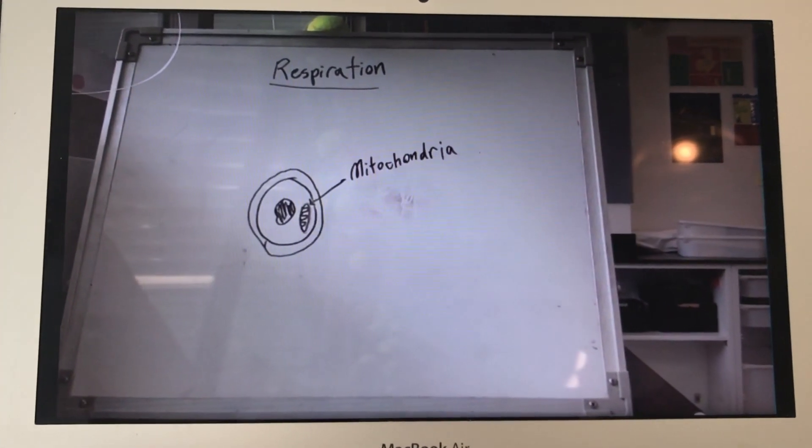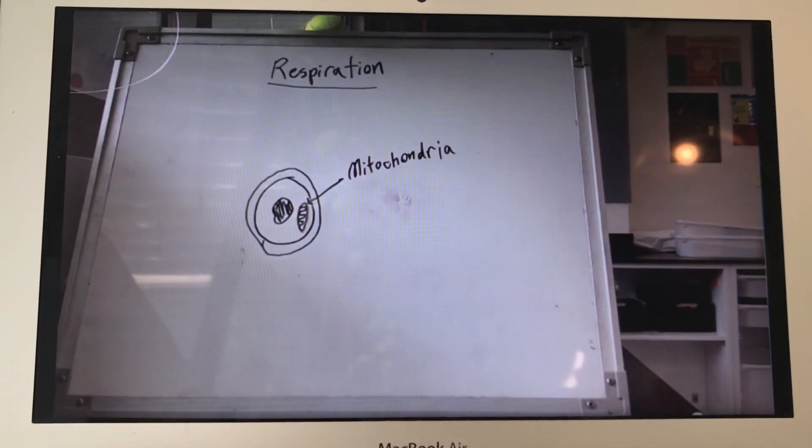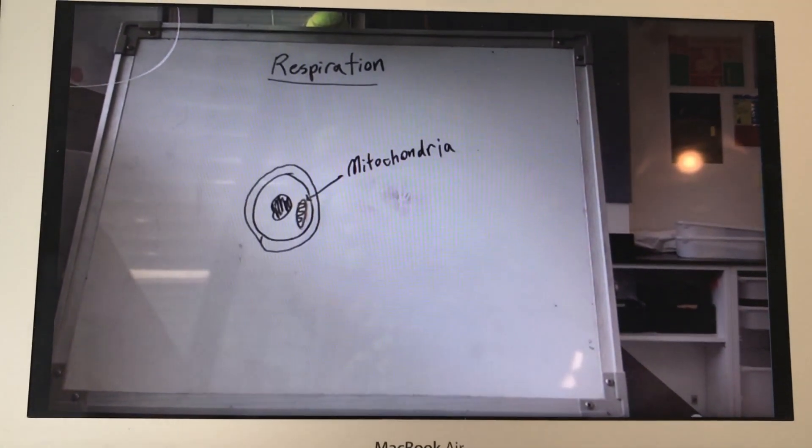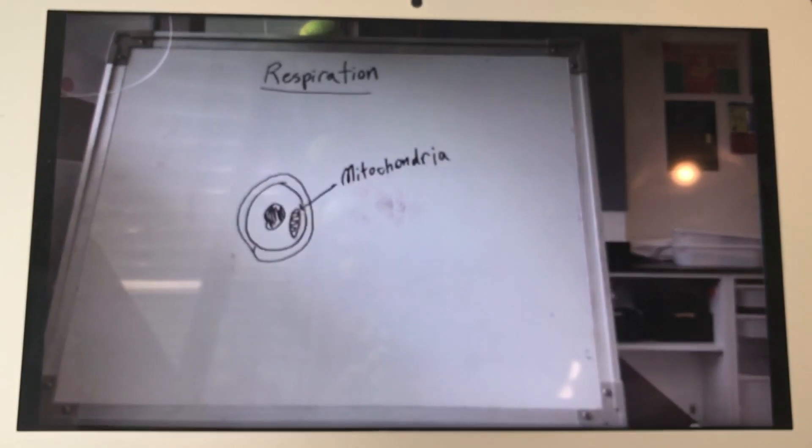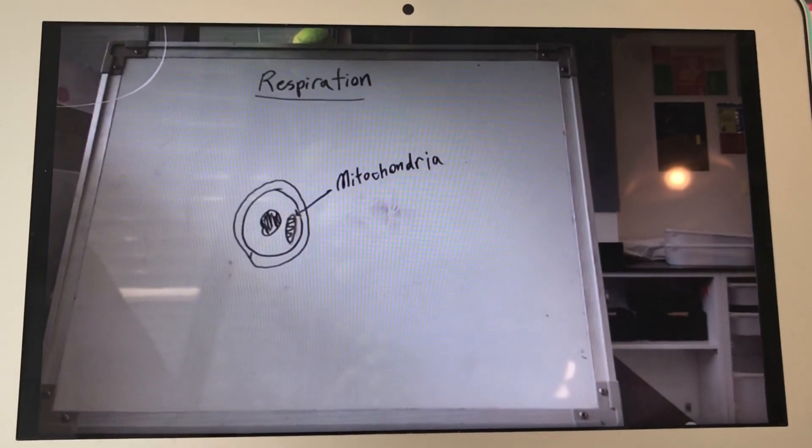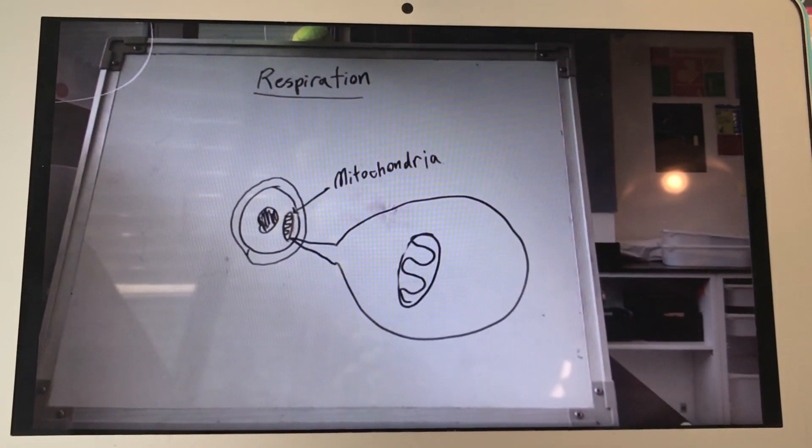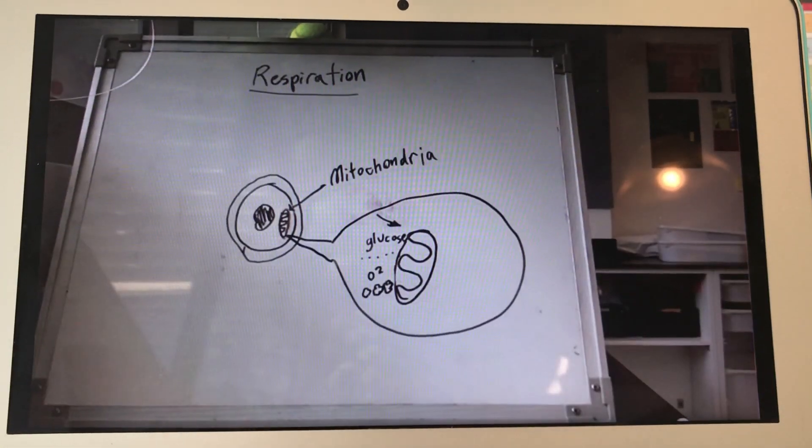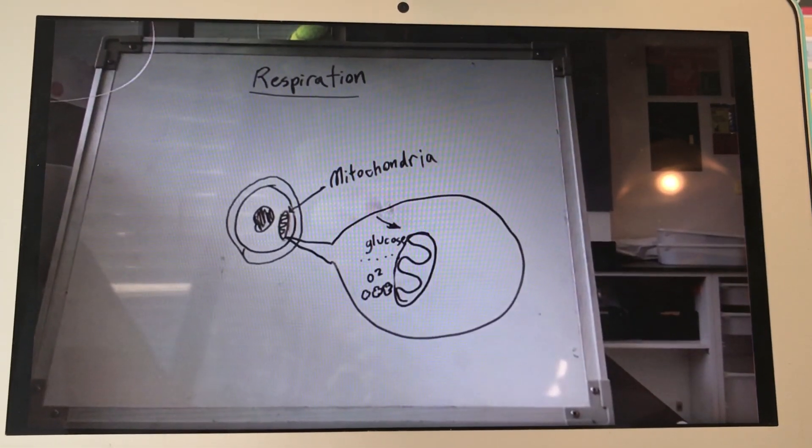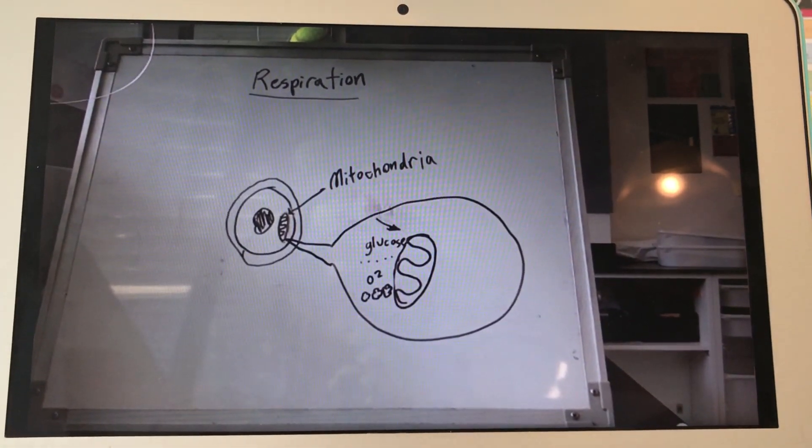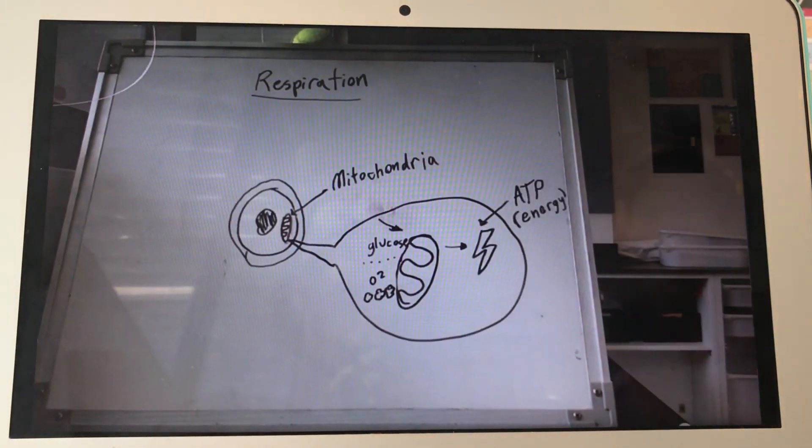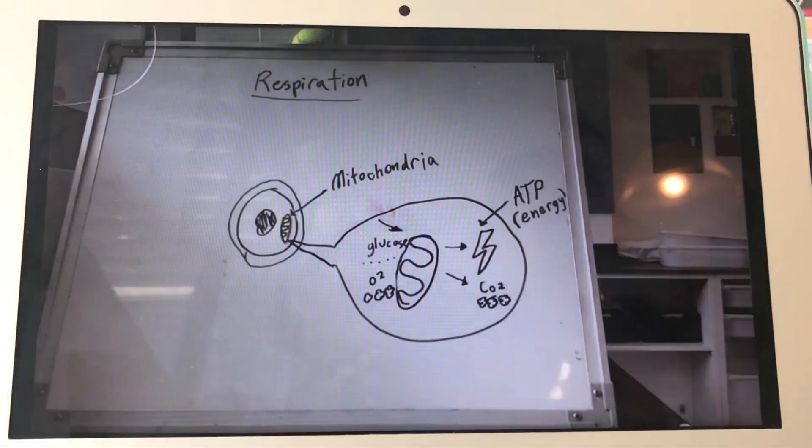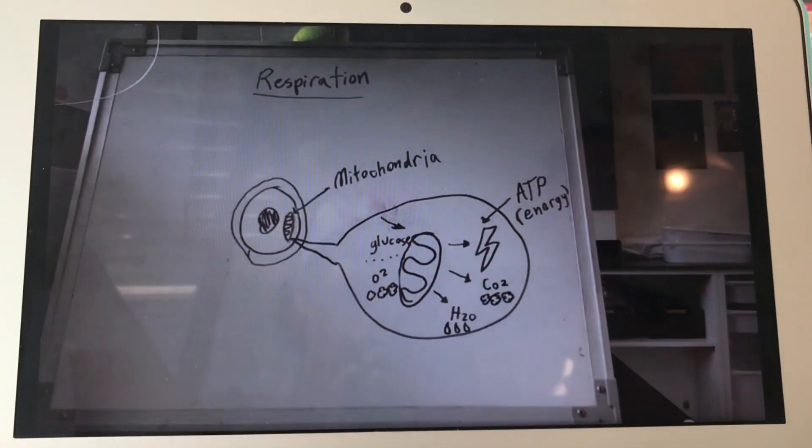The process starts with the mitochondria. There are other parts of the cells that will be mentioned later, but mitochondria is important for respiration. Here's a zoom in. The mitochondria takes in glucose and oxygen and transforms it into ATP, which is energy, carbon dioxide, and water, or H2O.